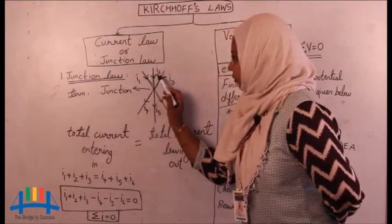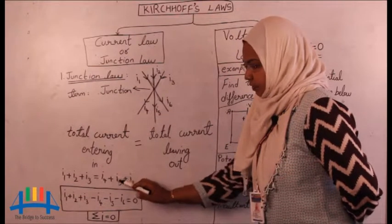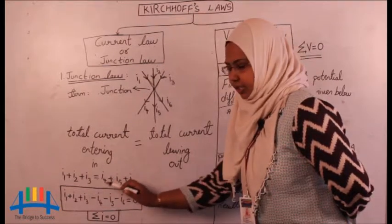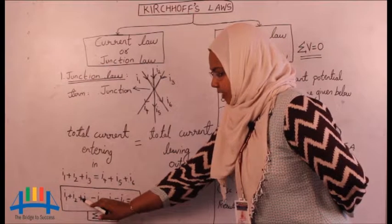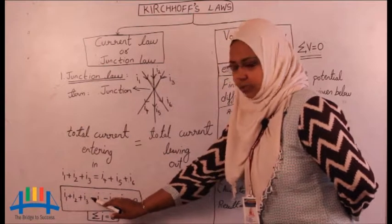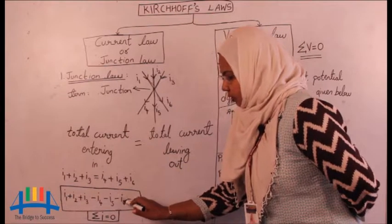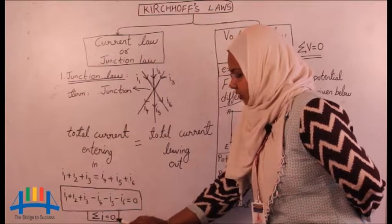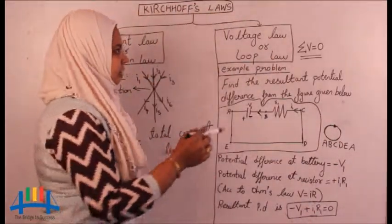For example, in this case i1, i2, i3 are entering into the junction, which is equal to i4, i5, i6 which are leaving the junction. When you take i4, i5, and i6 to the other side, they get a negative sign, so the positives and negatives cancel out each other and the sum will be equal to 0. So you can write it this way, or the shortcut is: sum of current is equal to 0. This is called the current law.